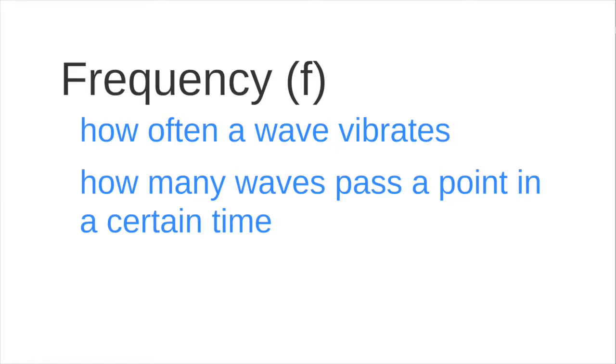So frequency is how often a wave vibrates. You can measure frequency by counting how many waves pass a stationary point in a certain time. That means that frequency is a ratio, waves per time, or cycles per time.